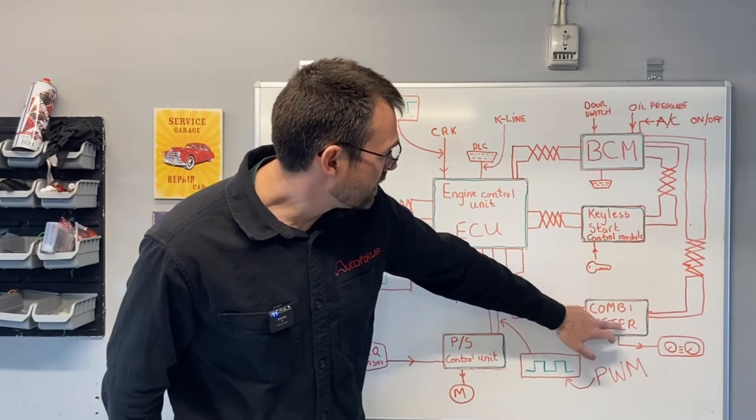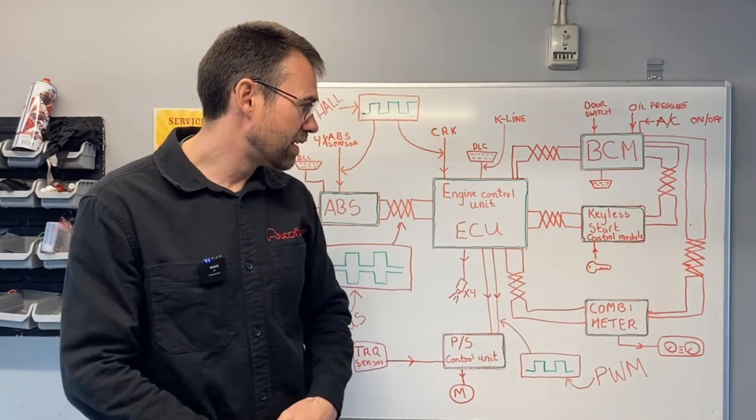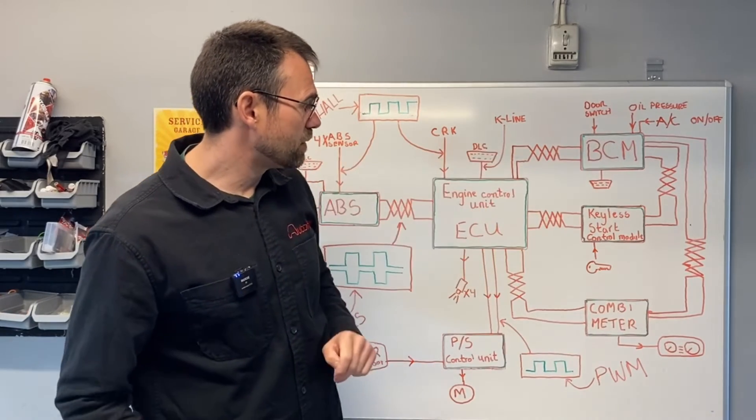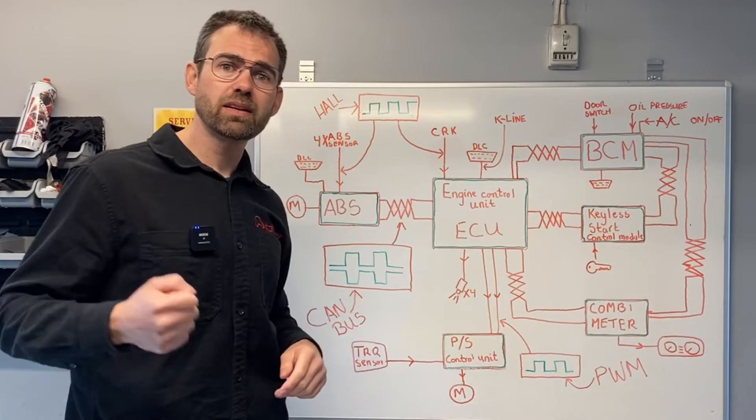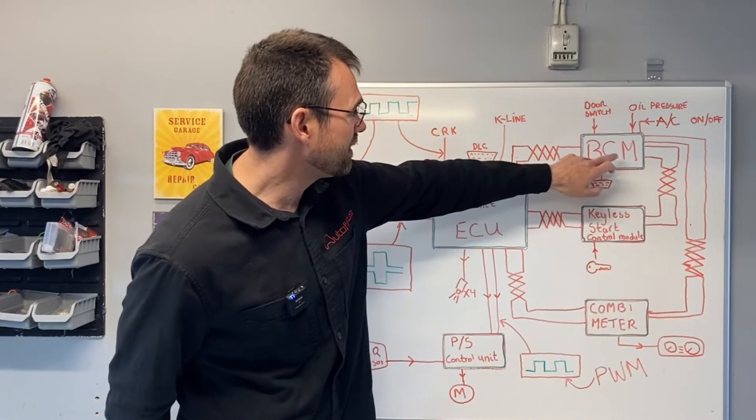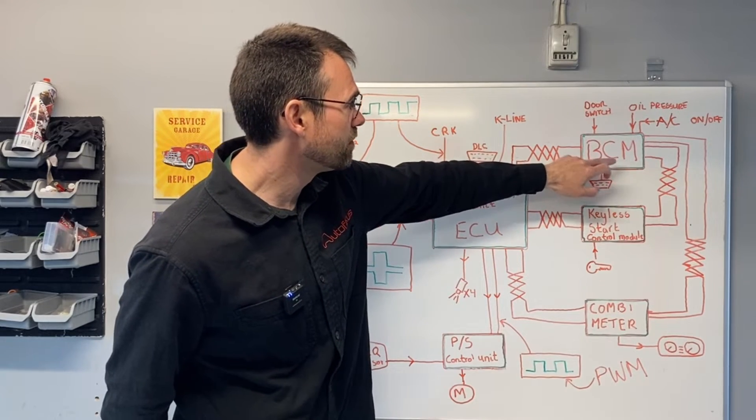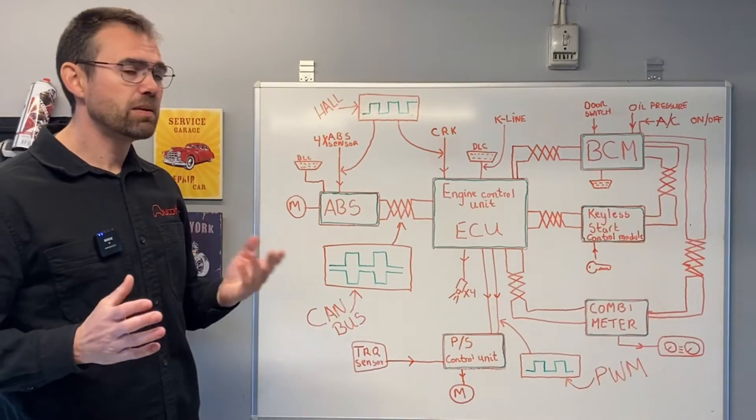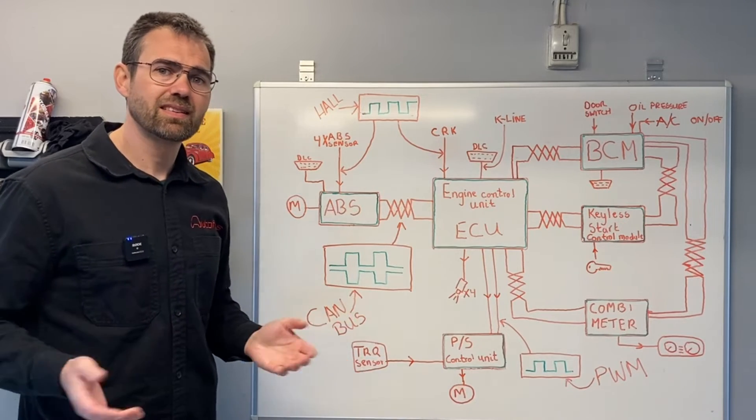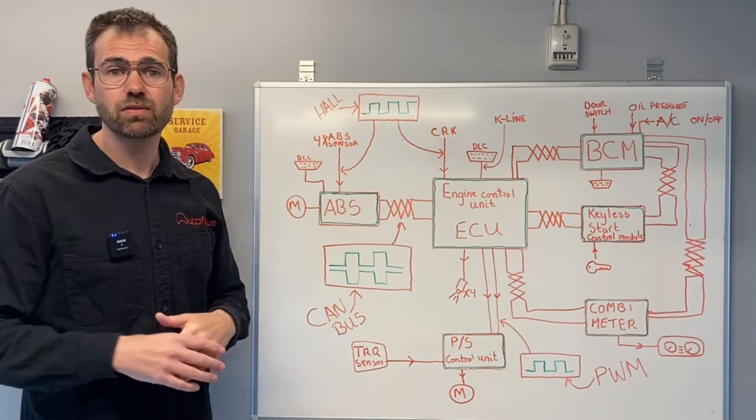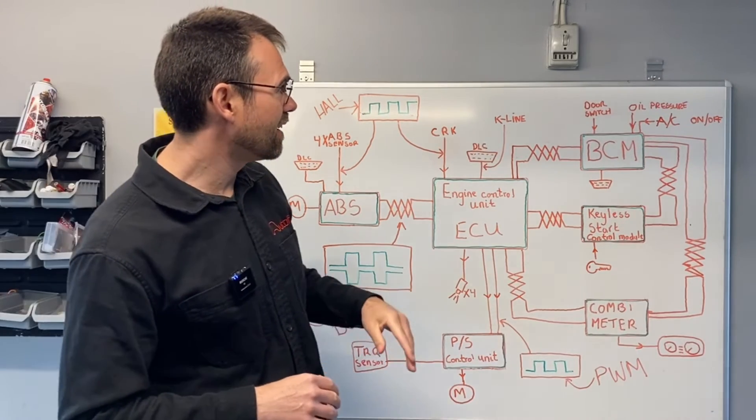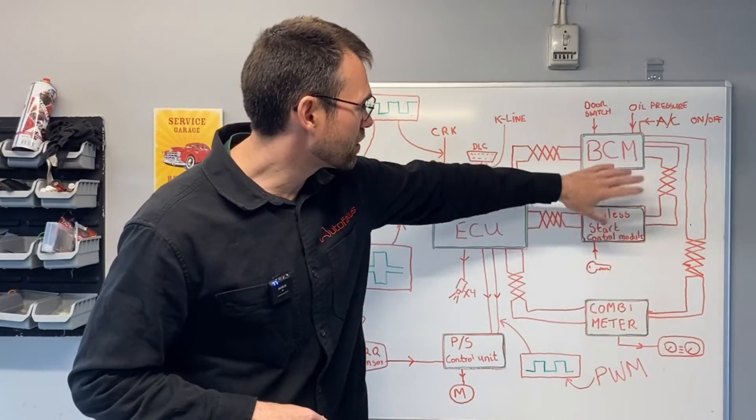It could also be the instrument cluster. As a driver, you would like to have the input the body control module receives, like if you pull the handbrake, we all see a light turning on in the instrument cluster. That light signal is sent or transmitted from the body control module through CAN bus. The beauty about the CAN bus system is that you actually just need two wires to transmit multiple signals to multiple nodes.